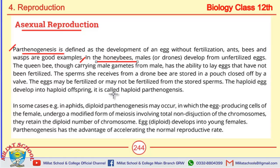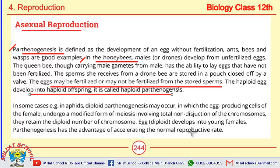What is haploid parthenogenesis? In honeybees, eggs may be fertilized or may not be fertilized from stored sperm. The haploid egg develops into a haploid offspring — this is haploid parthenogenesis. So in haploid parthenogenesis, a haploid egg is converted directly into a haploid offspring.